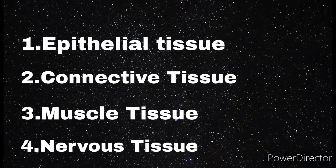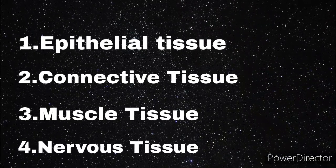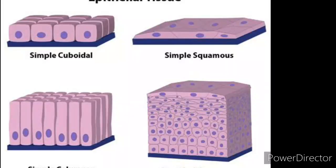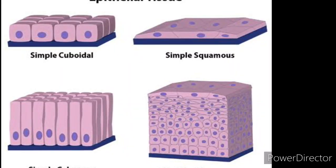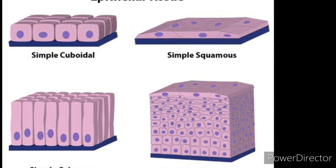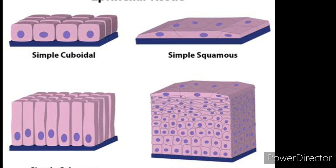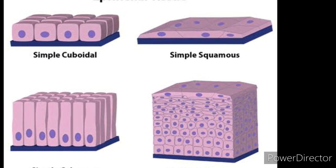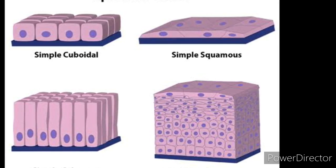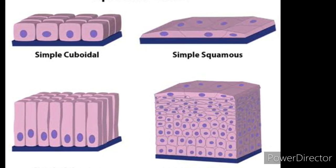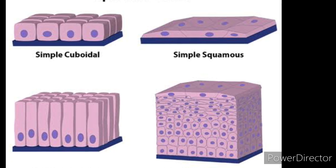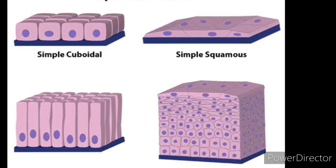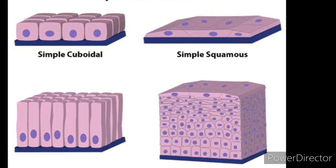Here I would explain the first type: epithelial tissue. It is a protective and covering tissue. This epithelial tissue covers the animal body from inside and outside. It is also divided into several types.